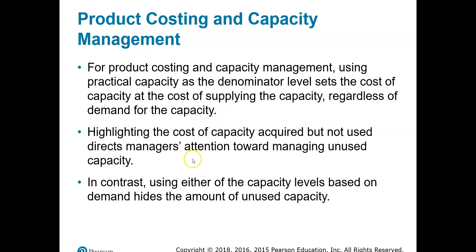The cost of unused capacity is the fixed manufacturing cost per unit multiplied by the difference between practical capacity and actual output — the difference between what we could produce and what we actually produced, multiplied by the fixed manufacturing cost per unit. That's what we want to focus on.